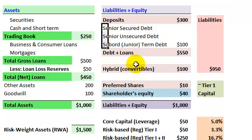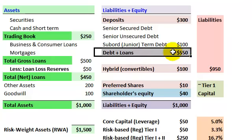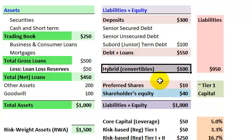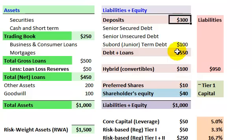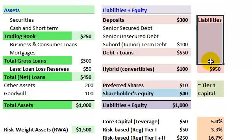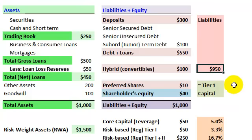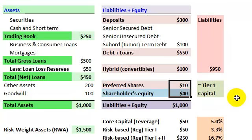In my example, we have senior secured, senior unsecured, and subordinated term debt, such that the total of debt plus deposits is $550. This bank also has some hybrid instruments like convertible bonds — bonds with embedded options to convert into equity — of $100. Adding deposits plus debt plus the convertibles, our total liabilities come to $950.